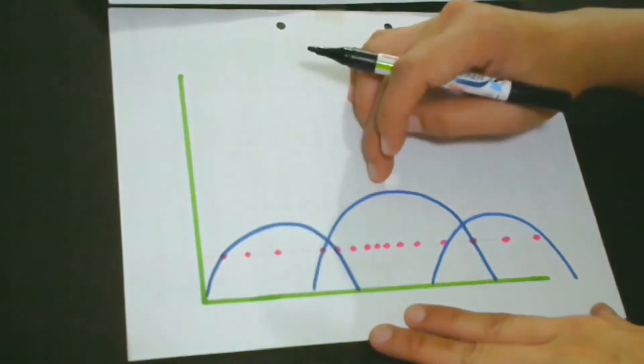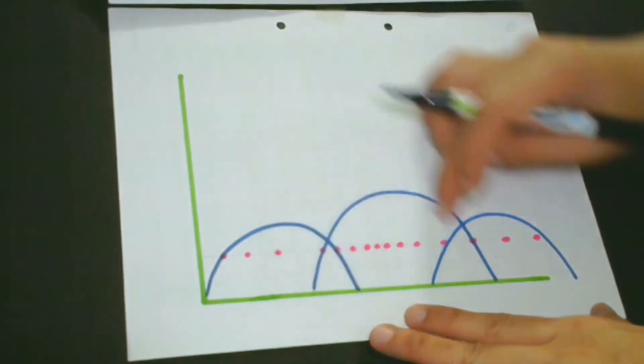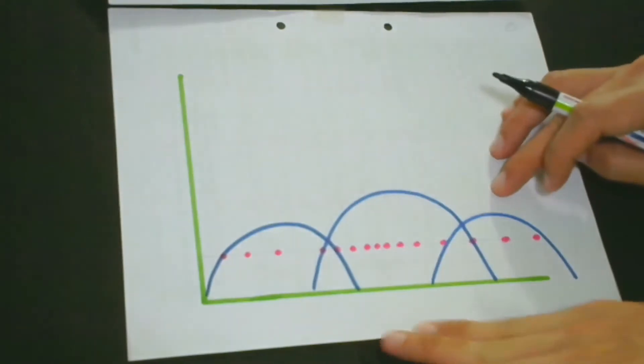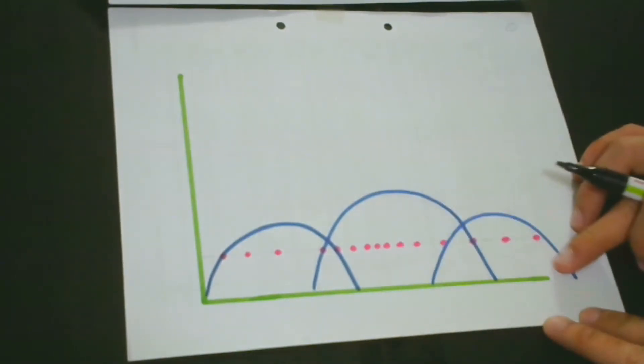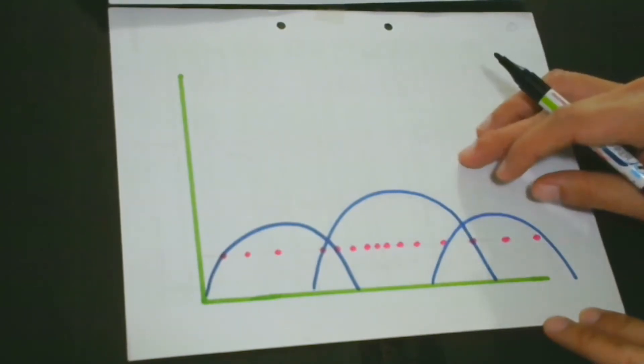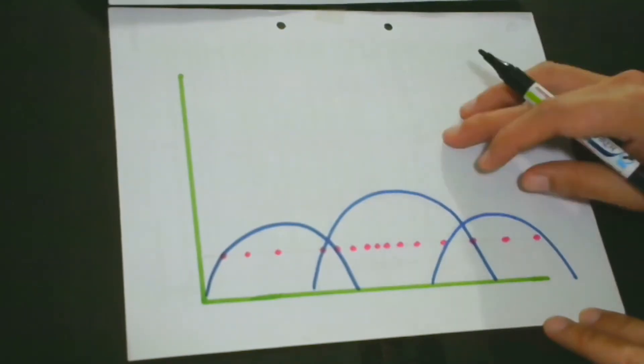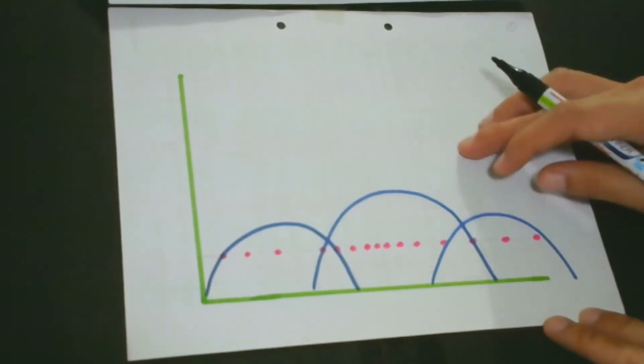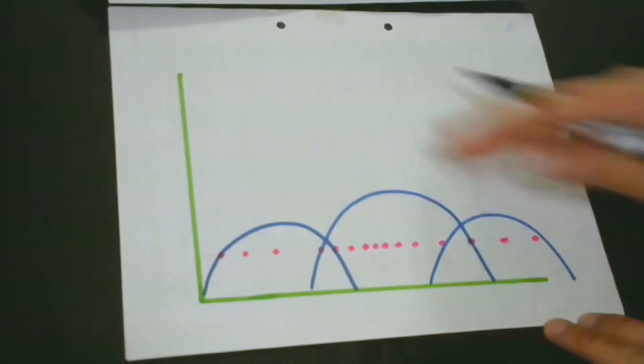For the second model that we make, it makes this kind of graph. And the third model, this graph is made. Now the question here is, which one really represents best the real situation of the sales performance? Which one do you think?